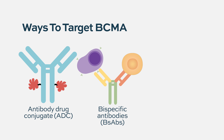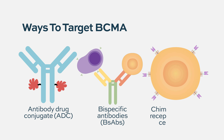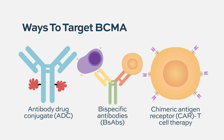The other approach is to take the patient's own T cells and genetically engineer them to express something on their surface that attaches to the target — in this case BCMA. This helps those cells recognize that target and flags the malignant myeloma cells for destruction.